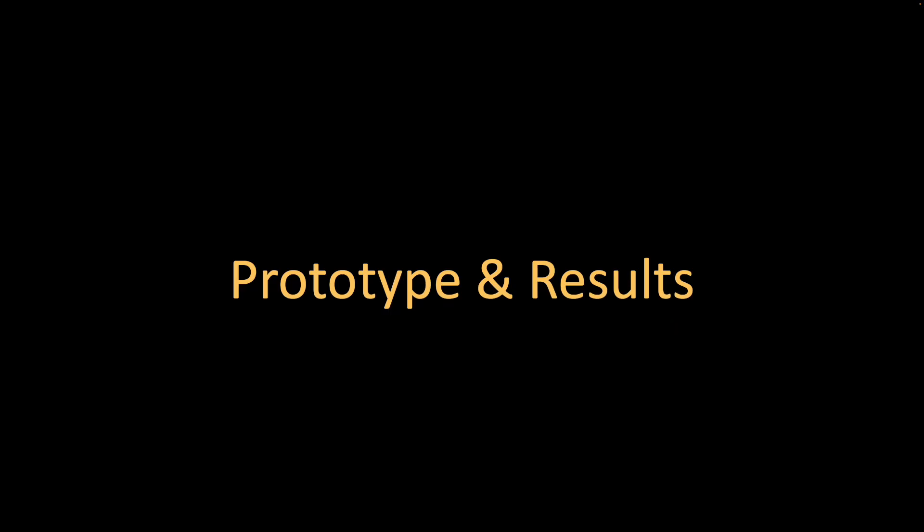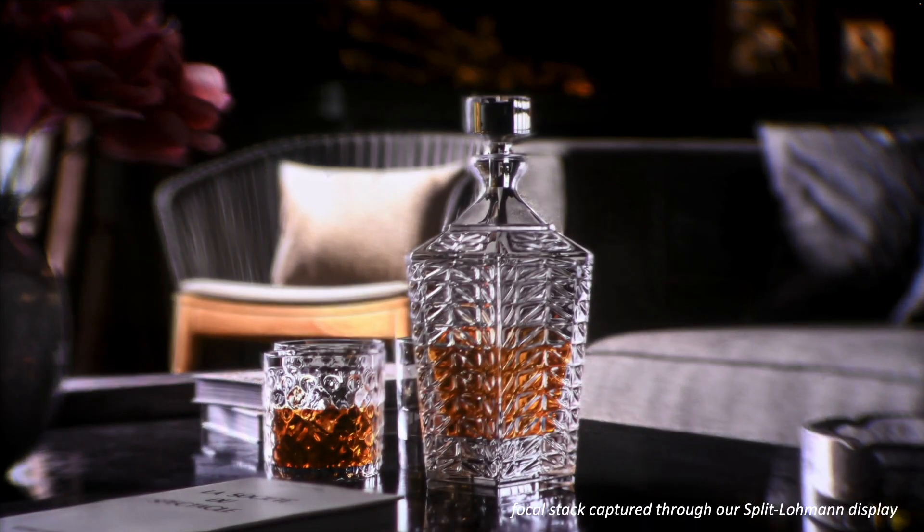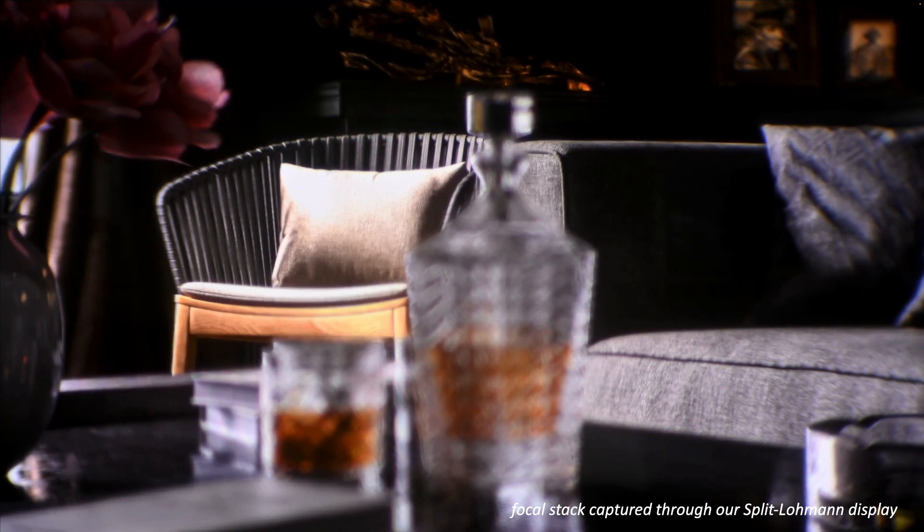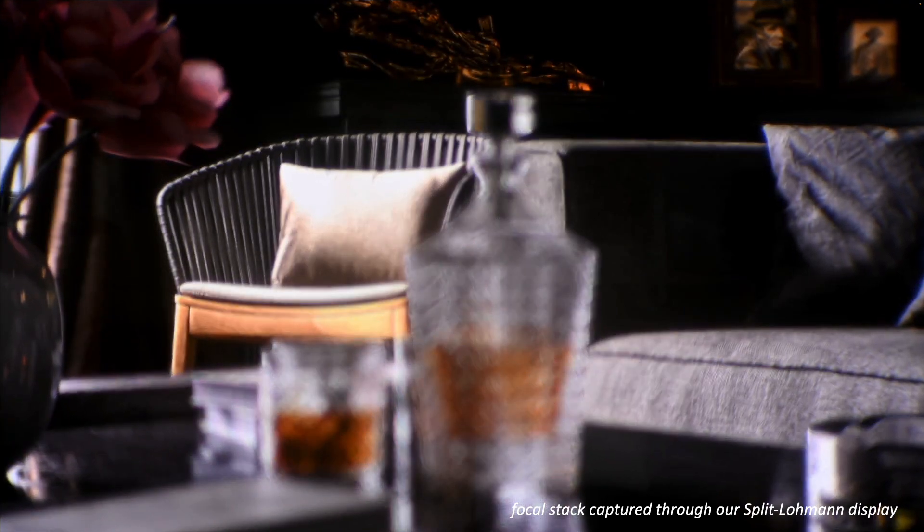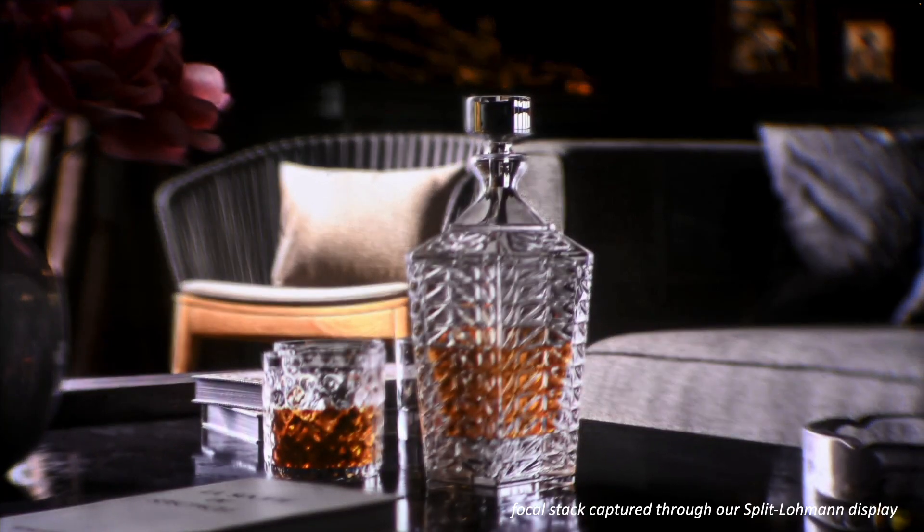Now let's look at some real-world results. Here is a photo of our optical setup. RGB images are given to the OLED on the left, and depth images are given to the SLM on the right. Here, we show what a camera sees when looking through the eyepiece. In this video, we adjust the focus settings of our camera's lens to bring different regions of our display into focus.